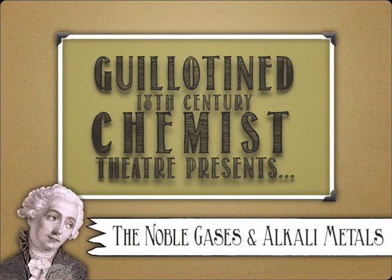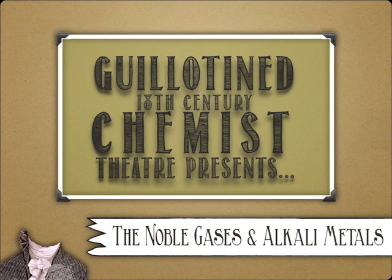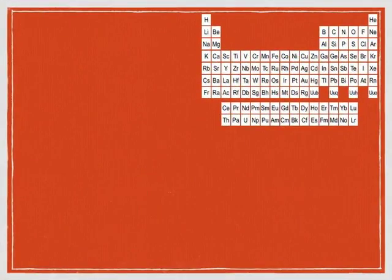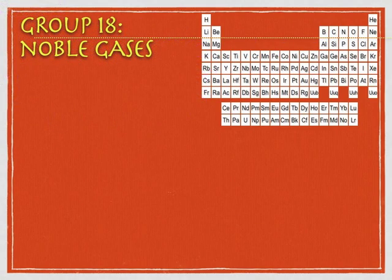Hello and welcome back to guillotined 18th century chemist theatre. Today we're going to hang out with some of my favorite families — most of the families of the periodic table. Noble gases and the alkaline metals are great places to start. We'll talk about the characteristics and behaviors of both families, starting with some general properties, then picking out a couple of elements to highlight.